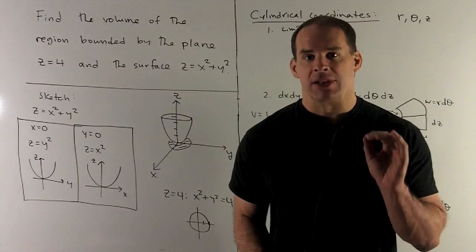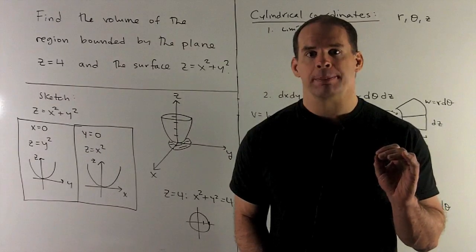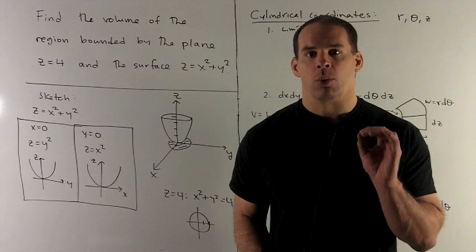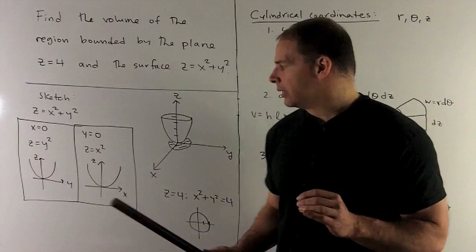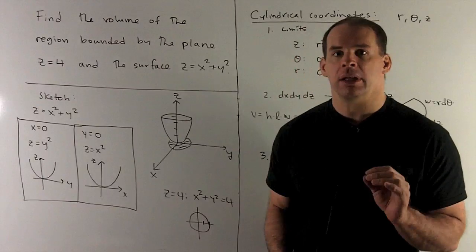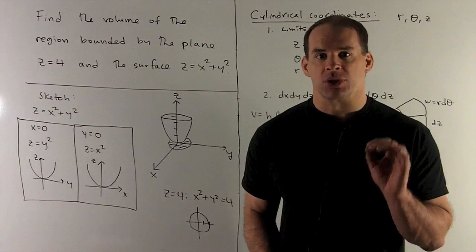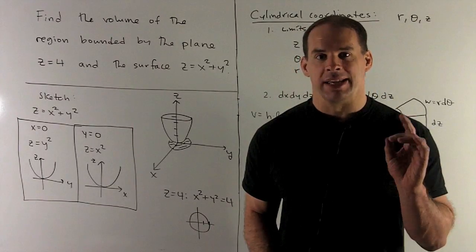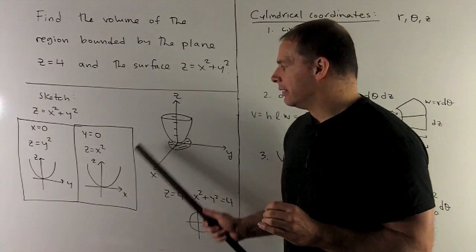I let x be equal to 0, that's going to be the trace in the yz plane. I have z equals y squared, so this is my y-axis, and I have a parabola facing up. We let y be equal to 0, that's going to be the trace in the xz plane, and again, parabola facing up.